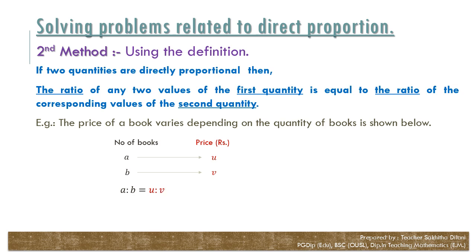This can be expressed in terms of fractions. You have learned to write a ratio as a fraction in previous grades. That is, A over B equals U over V. If you want, you can write it another way: B over A equals V over U. By cross multiplication, you can write A into V equals B into U.